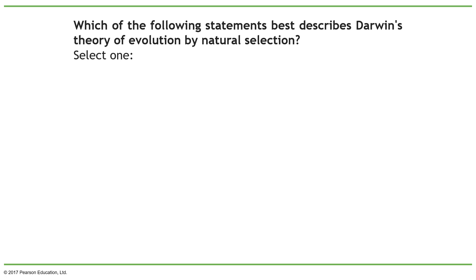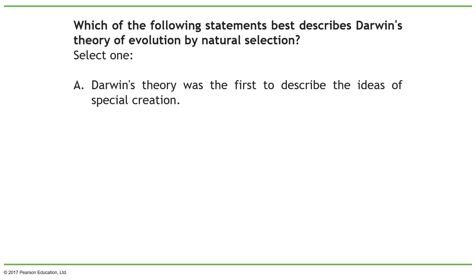Let's go for the first option. Darwin's theory was the first to describe the idea of special creation. This is completely opposite to what Darwin did — Darwin doesn't talk about special creation. That was more from a religious perspective.